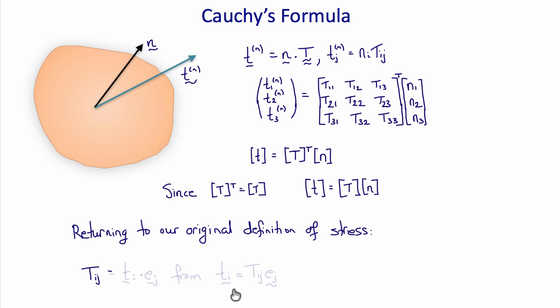And then just to remind you of our original earlier definition, this stress was that T i j equals T i dot e j. This is just a special case of Cauchy's formula when the unit normal vector n is the unit vectors of our coordinate frames e j.